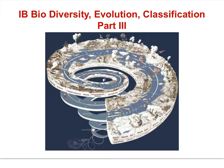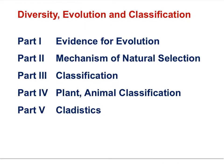IB Biodiversity Evolution Classification Part 3 has its focus on understanding classification. The essential idea is that species are named and classified using an internationally agreed upon system. The outline of movies for the Evolution Core SL and HL is provided here. Use this outline to find the movie you need for revision. This movie is focused here.